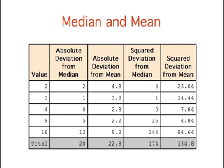On the other hand, the sum of squared deviations from the median is larger than the sum of squared deviations from the mean. This is the case because the mean minimizes the sum of squared deviations.